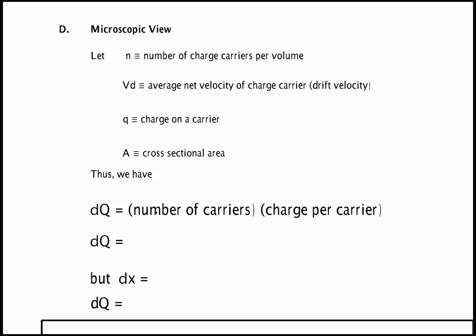Now to find the amount of charge moving we need to find the number of carriers and multiply by the charge per carrier. To find the number of carriers we have n, the number per volume, and then we need to multiply by the volume. Well the volume is the cross sectional area times the thickness which would be dx.